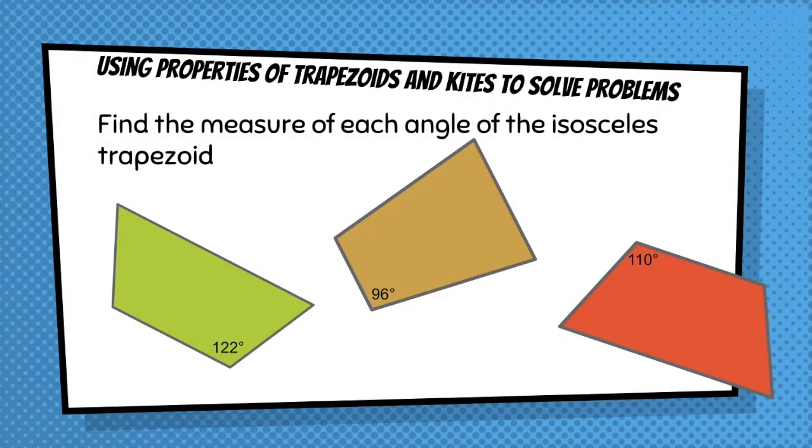So let's use some properties of trapezoids and kites to solve some problems. Can you go ahead and find the measure of each angle of these isosceles trapezoids? Pause the video and go ahead and solve these.